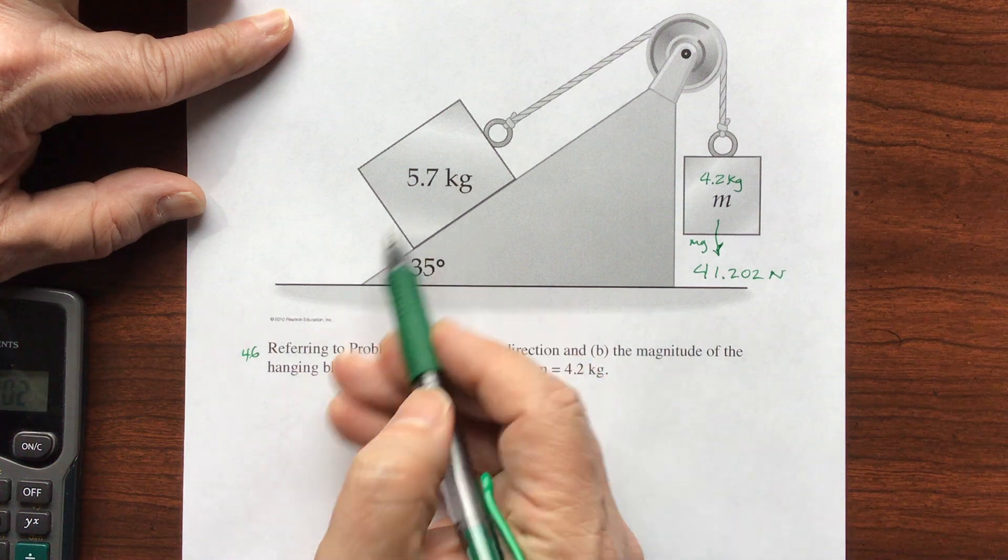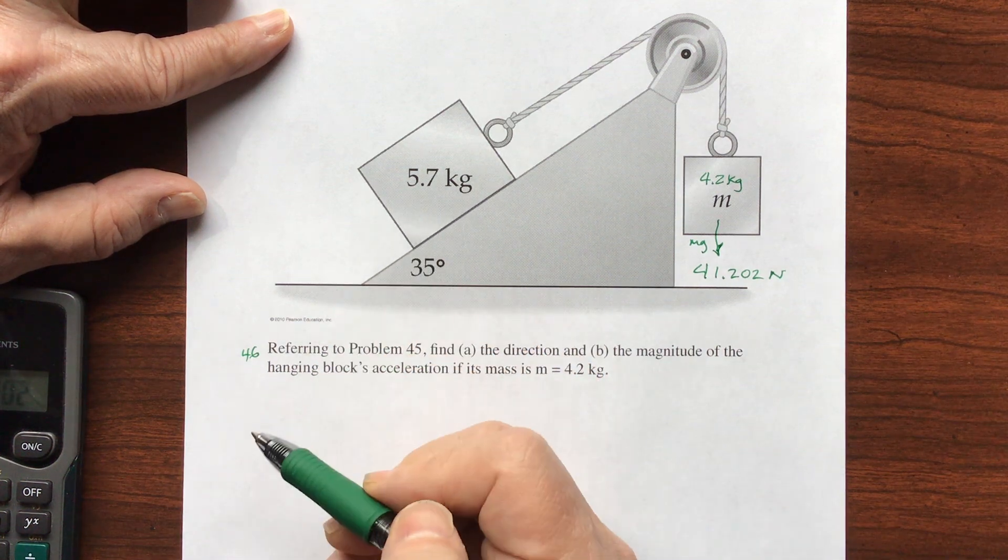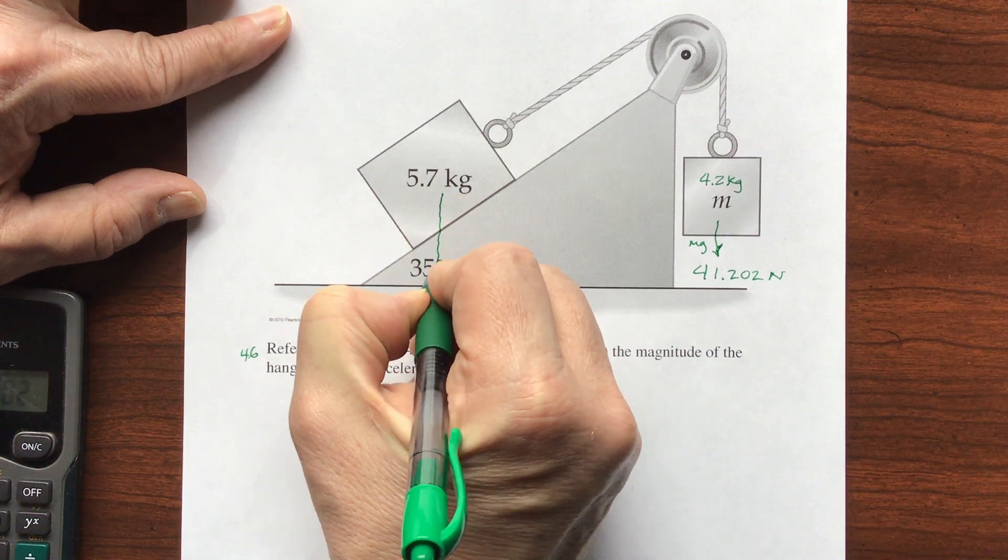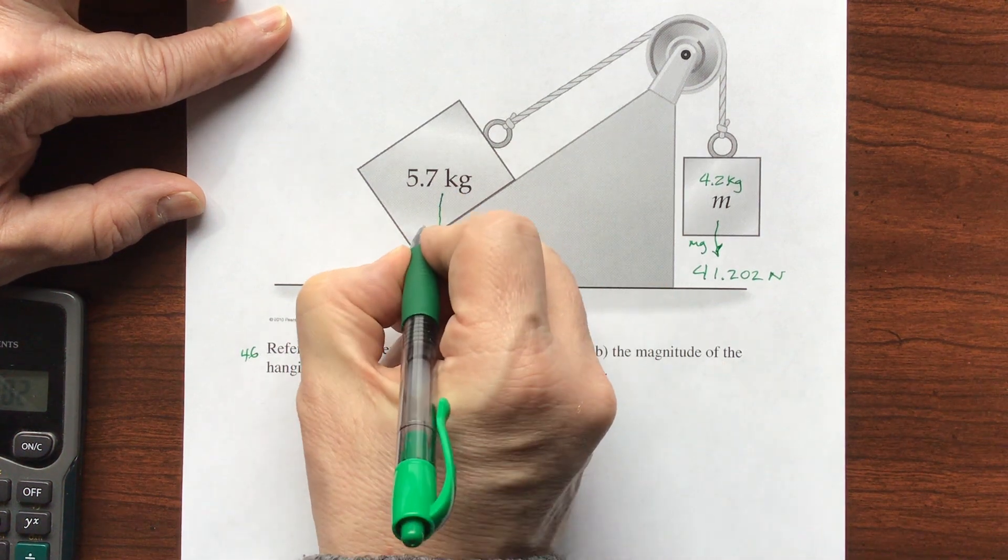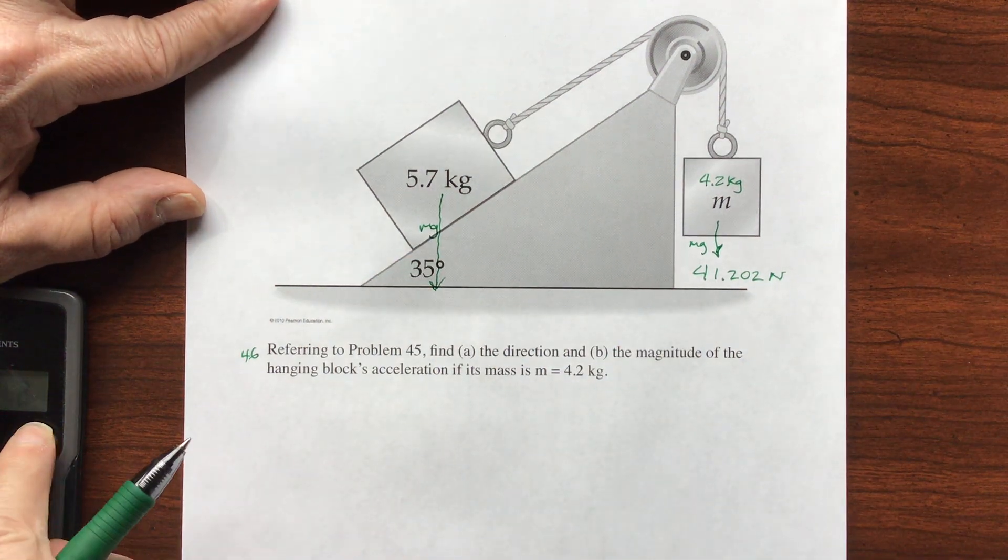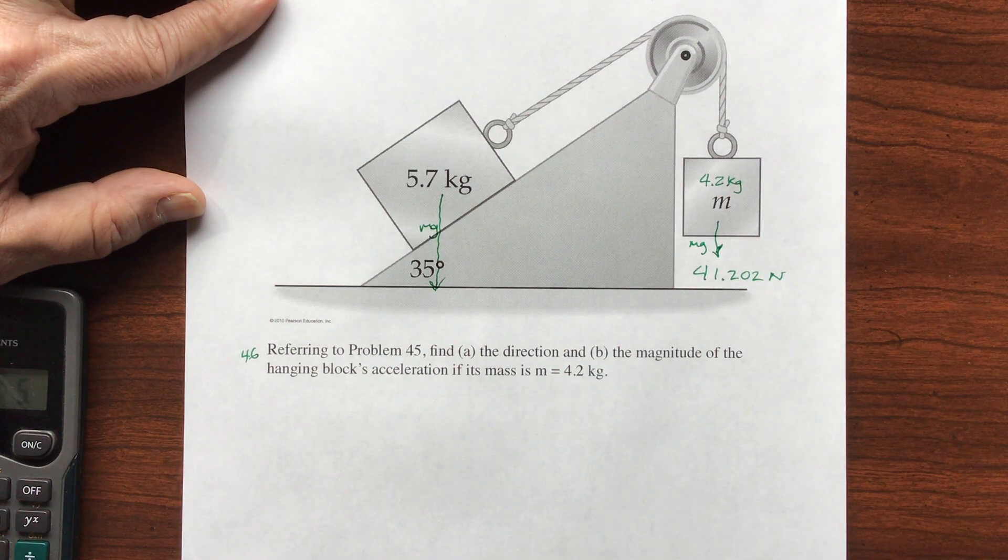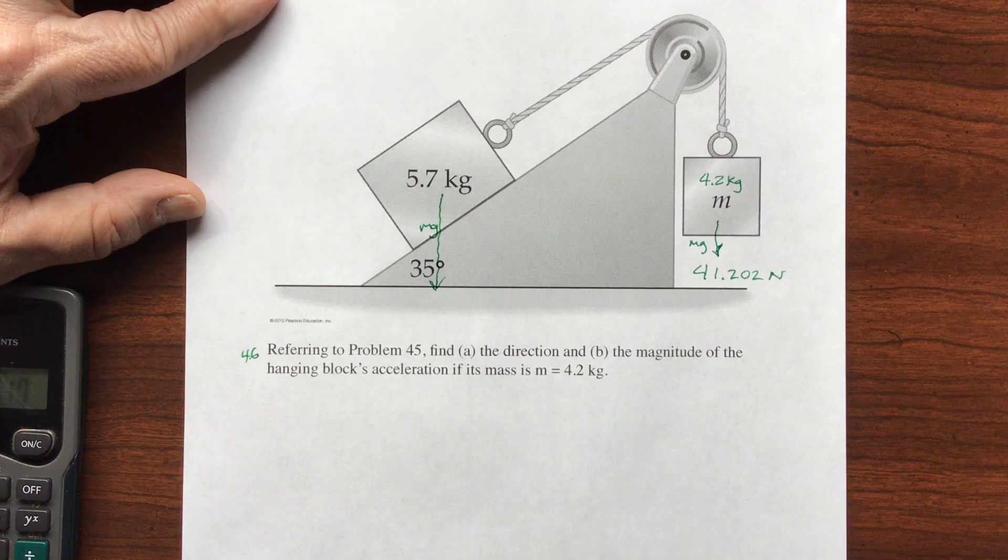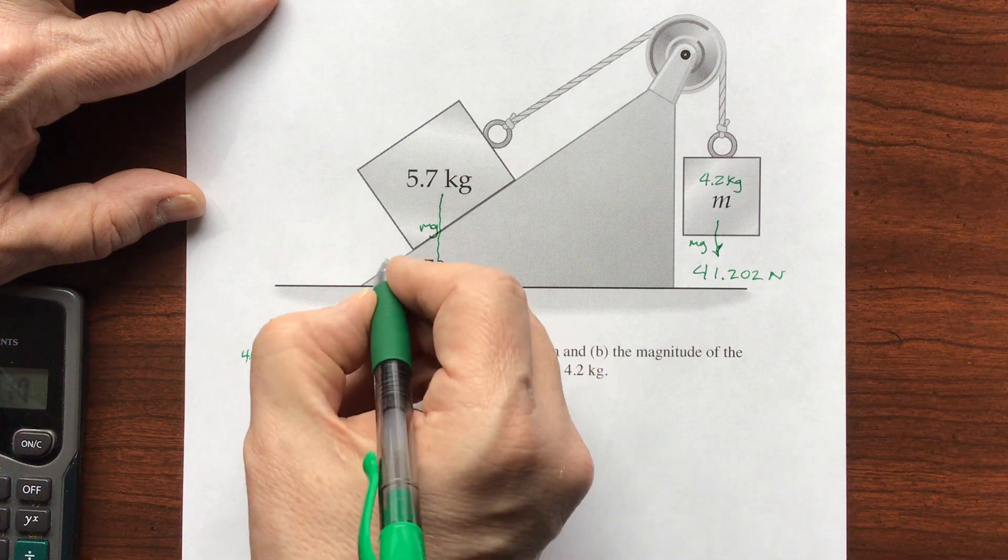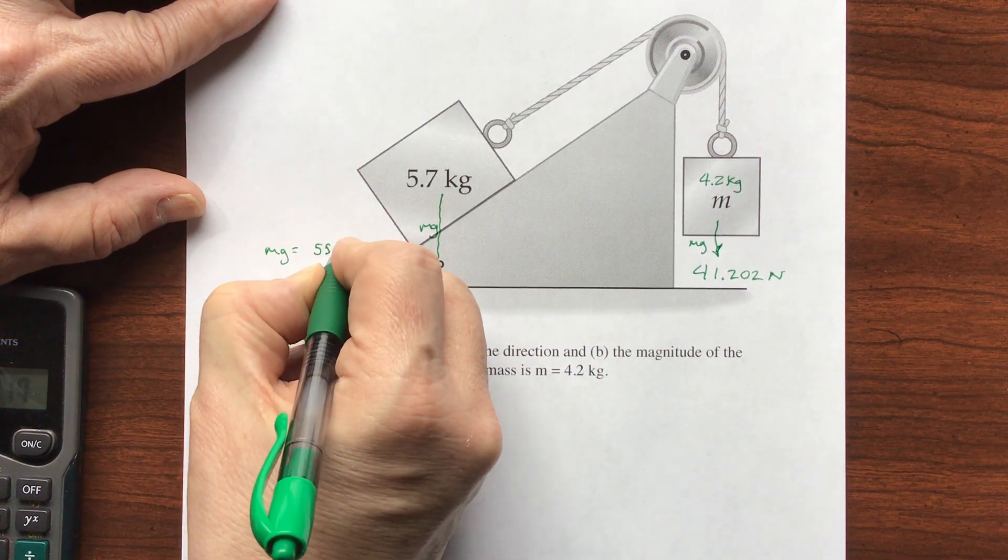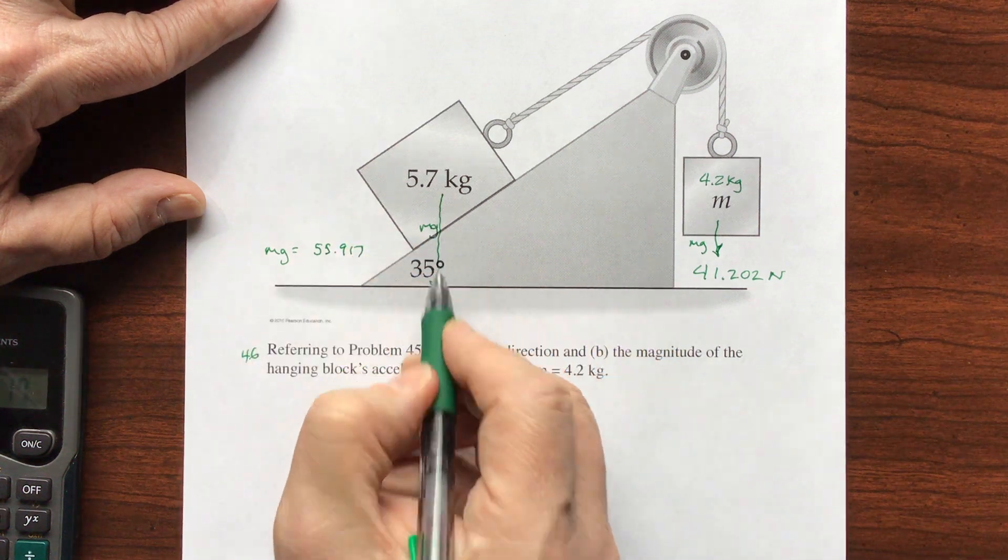Now the other force is going to be the force pulling this down the hill. So I have an mg here, and let's go ahead and do mg. M is 5.7 times 9.81, and this is mg equals 55.917.